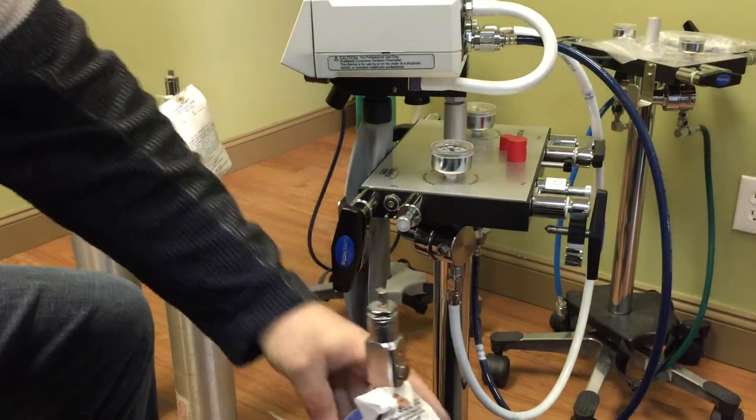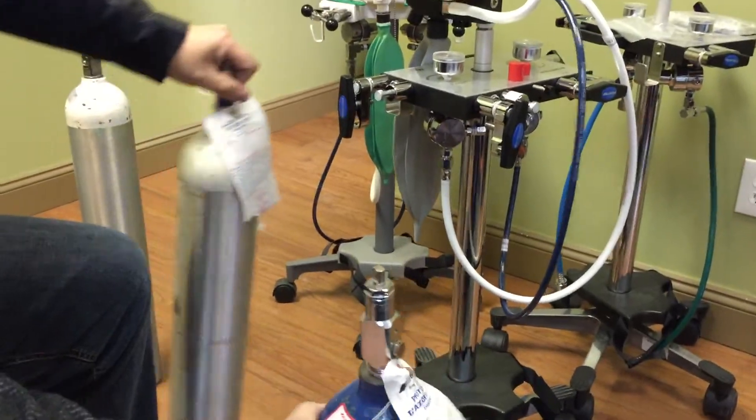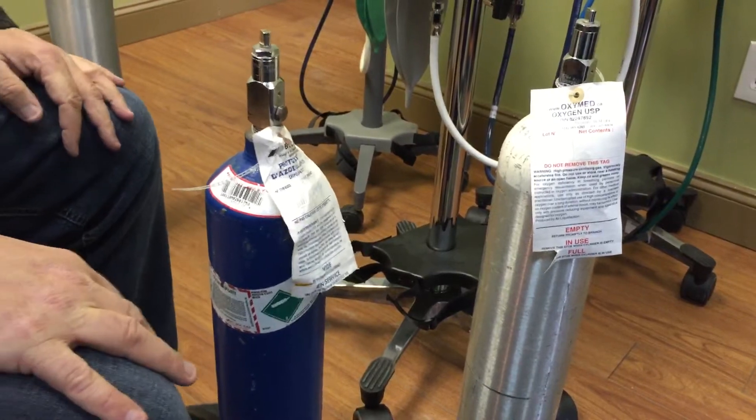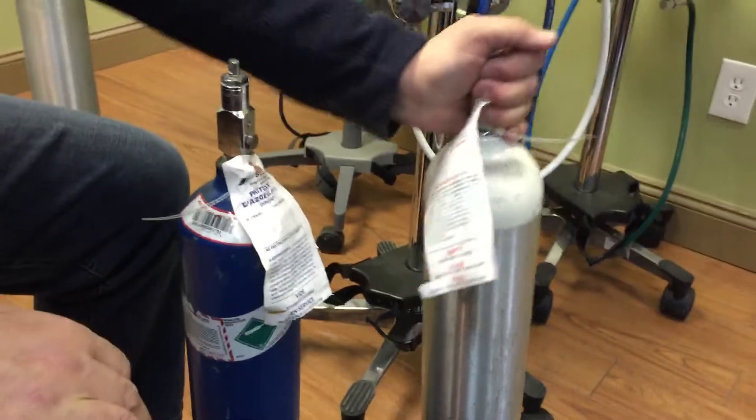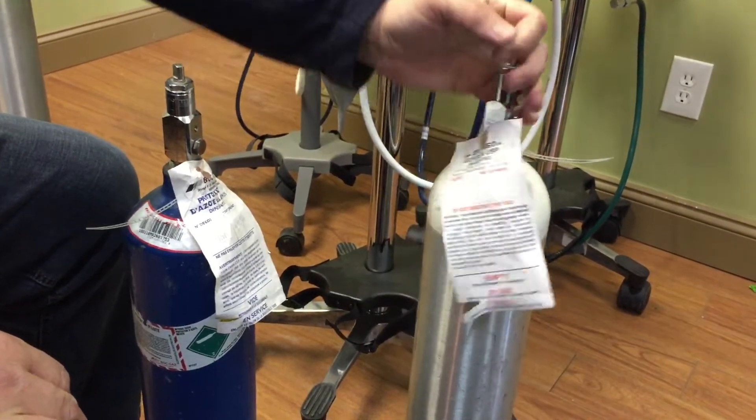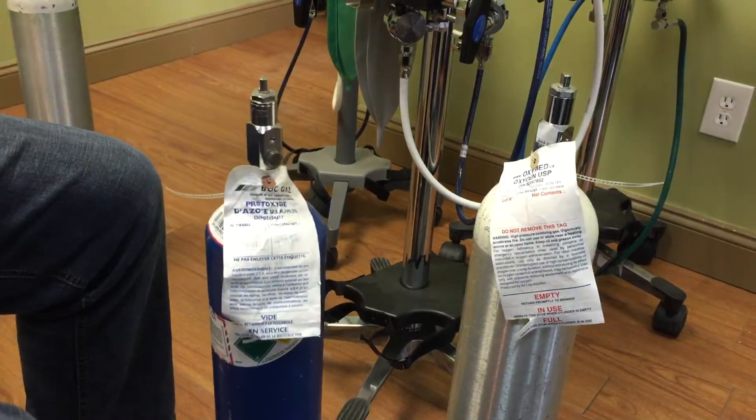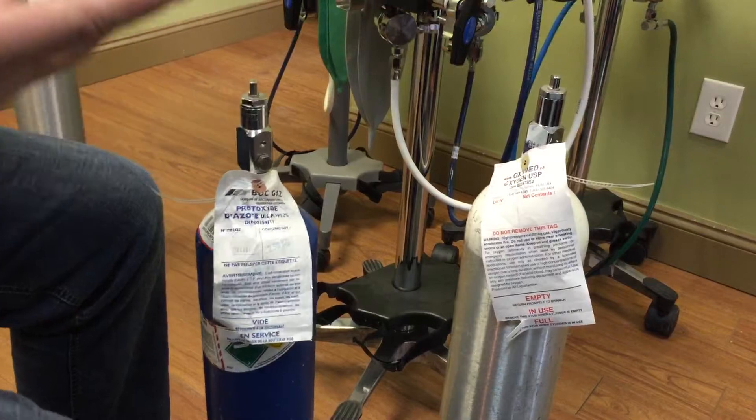A little bit on nitrous and oxygen. The oxygen tank is actually very light. The nitrous tank is very heavy. The reason being is nitrous is a liquid. Oxygen is like a gas form.